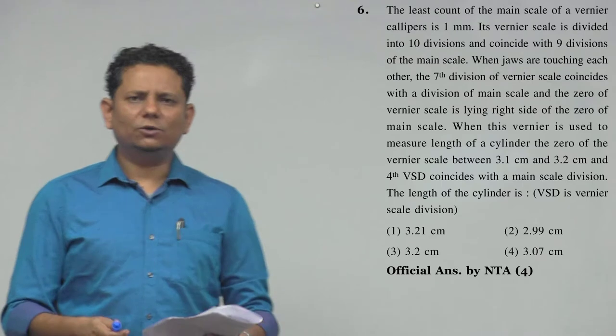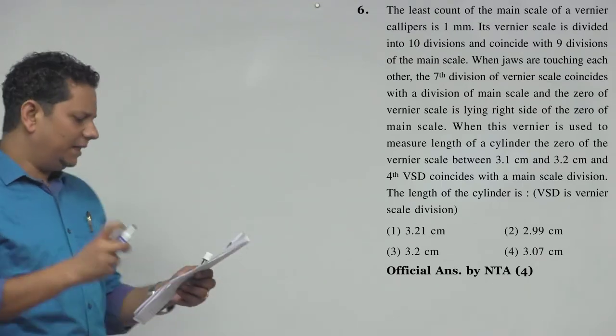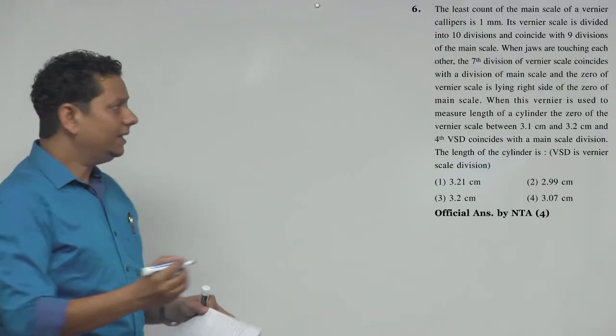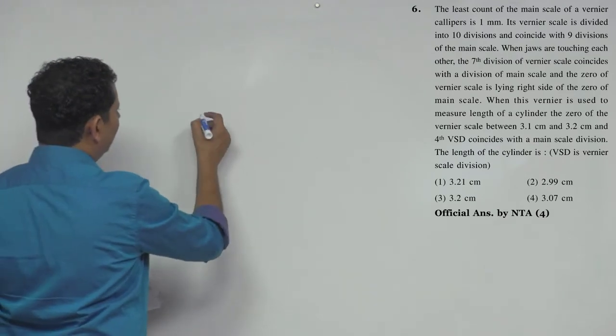Now let us know the length of the cylinder. Four options are given. If you have a little bit of vernier caliper practice, then first let us see the least count.